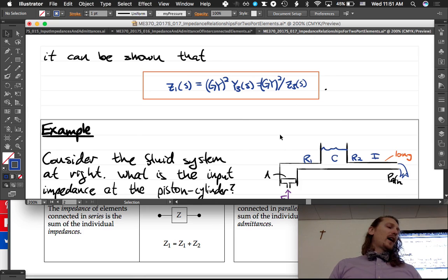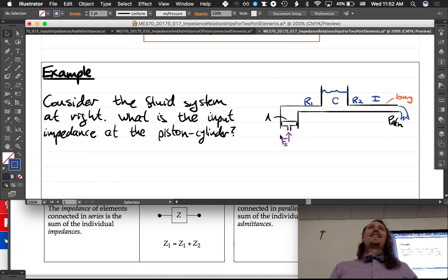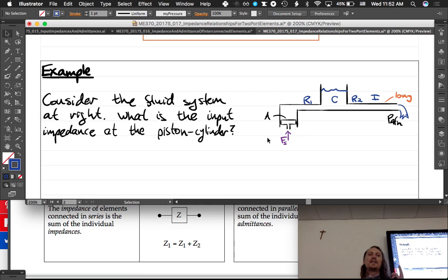And I would be remiss not to just do this example. You guys would be so sad if I didn't just do it. I know you guys have lunch now, and I have a meeting, but let's just do this example. Let's take a couple minutes, right? So consider the fluid system here. What is the input impedance at the piston-cylinder? So what impedance is felt at the piston cylinder?